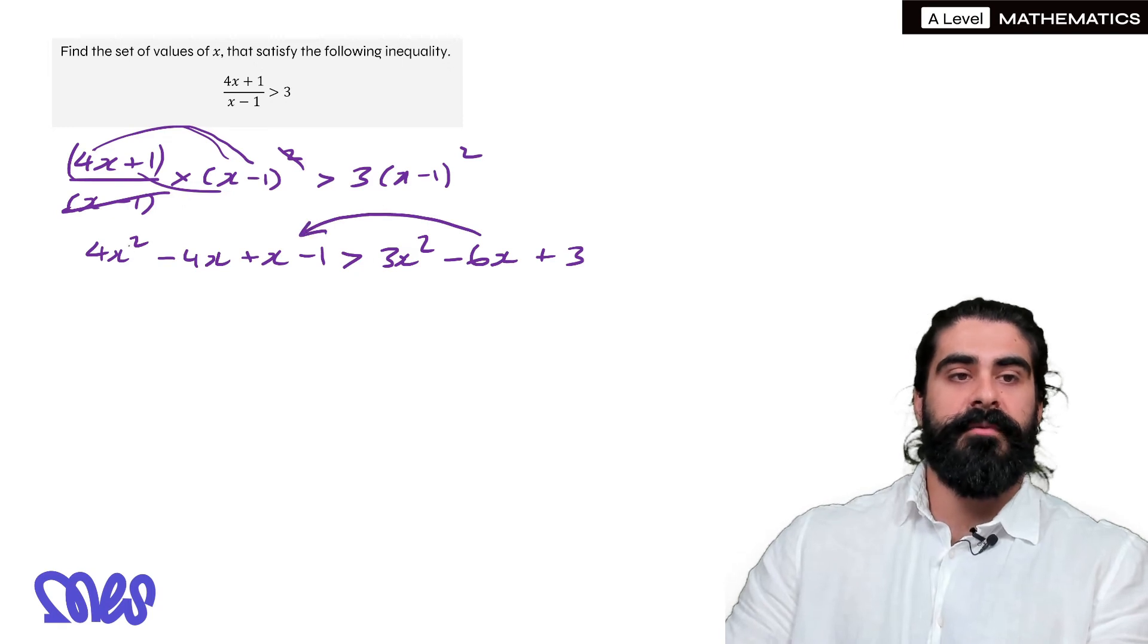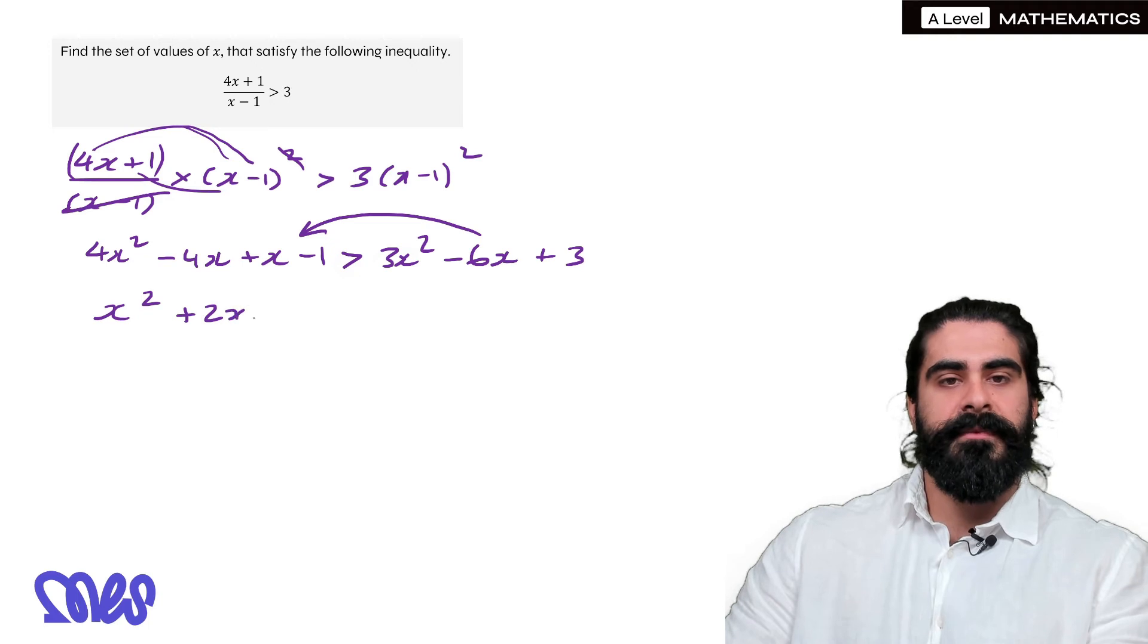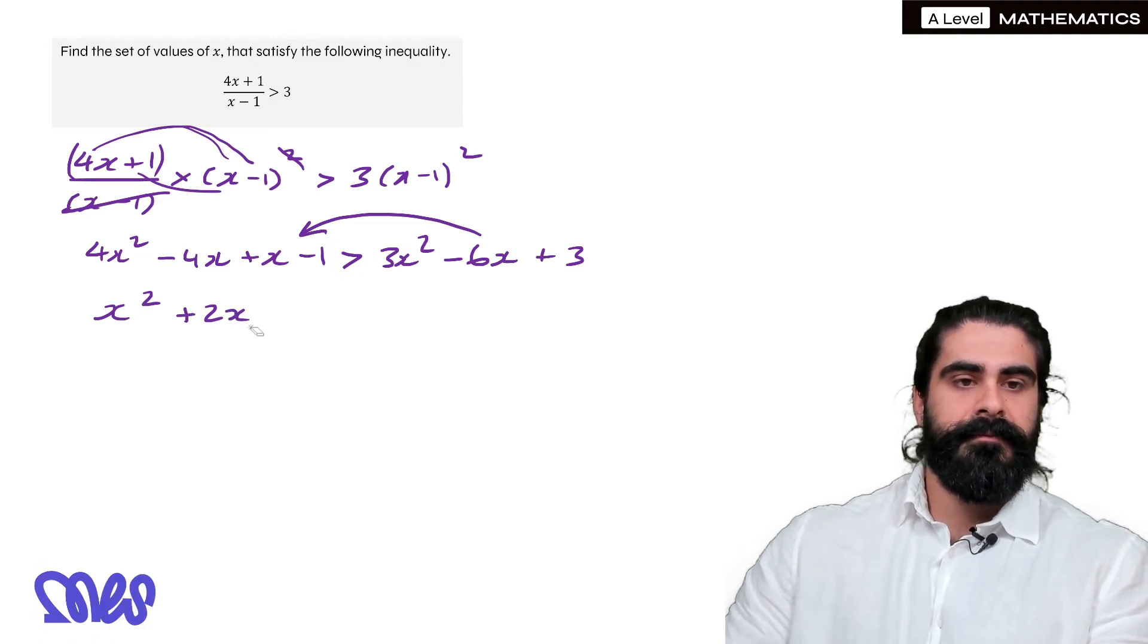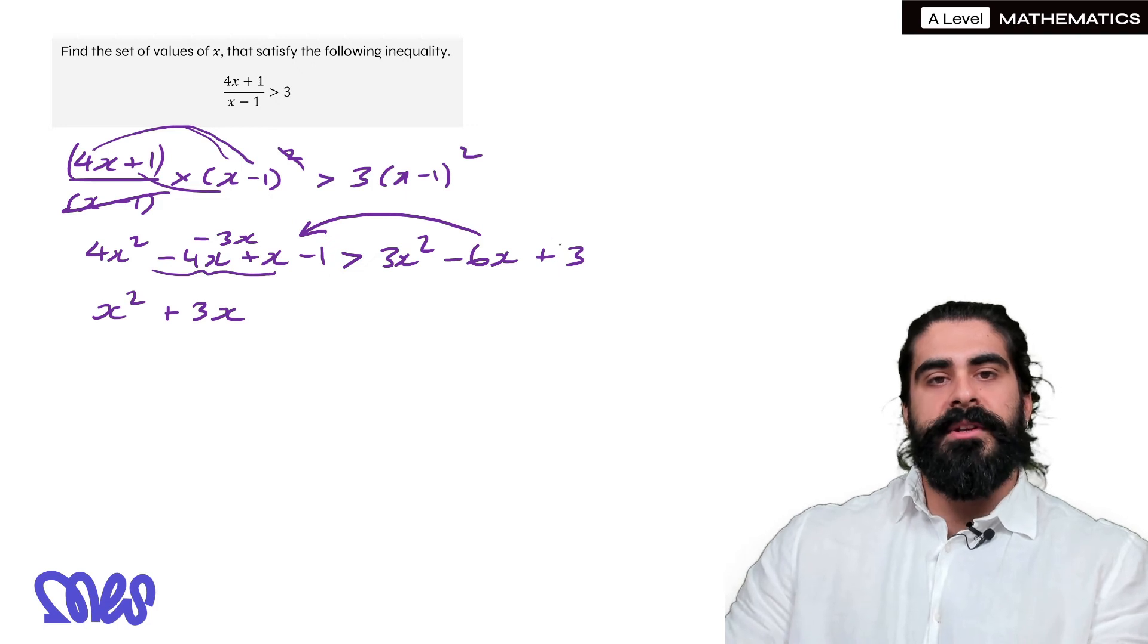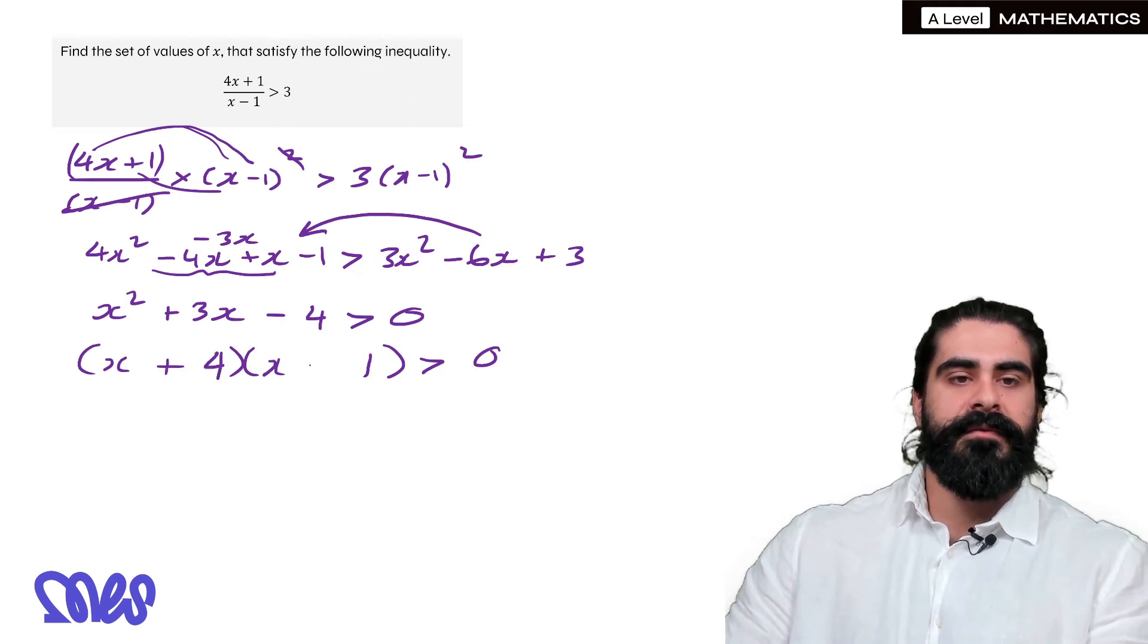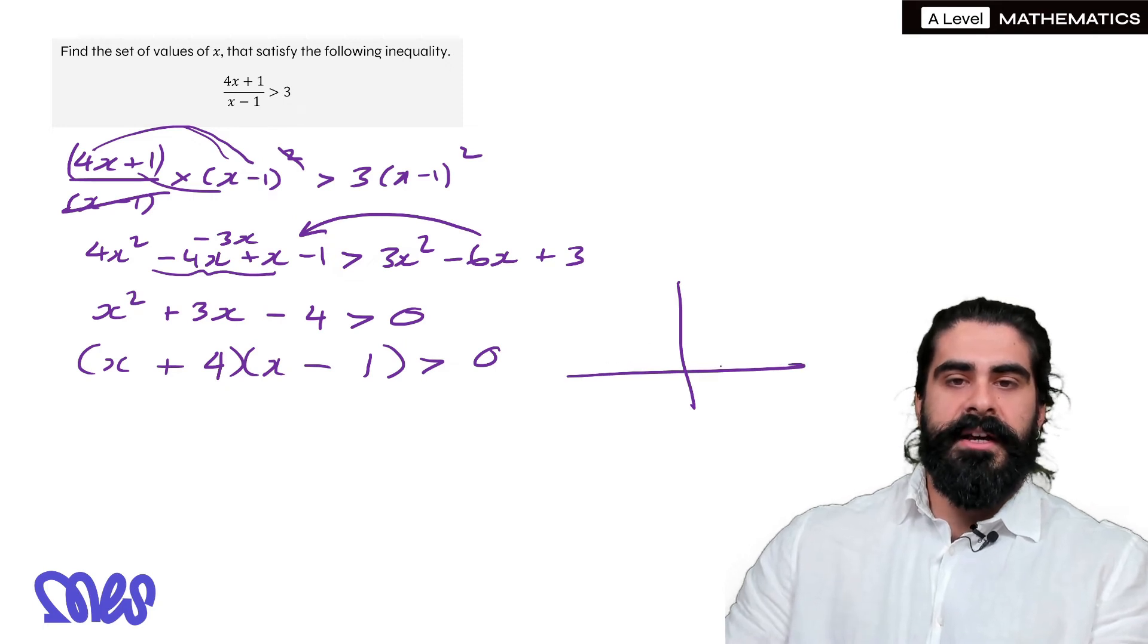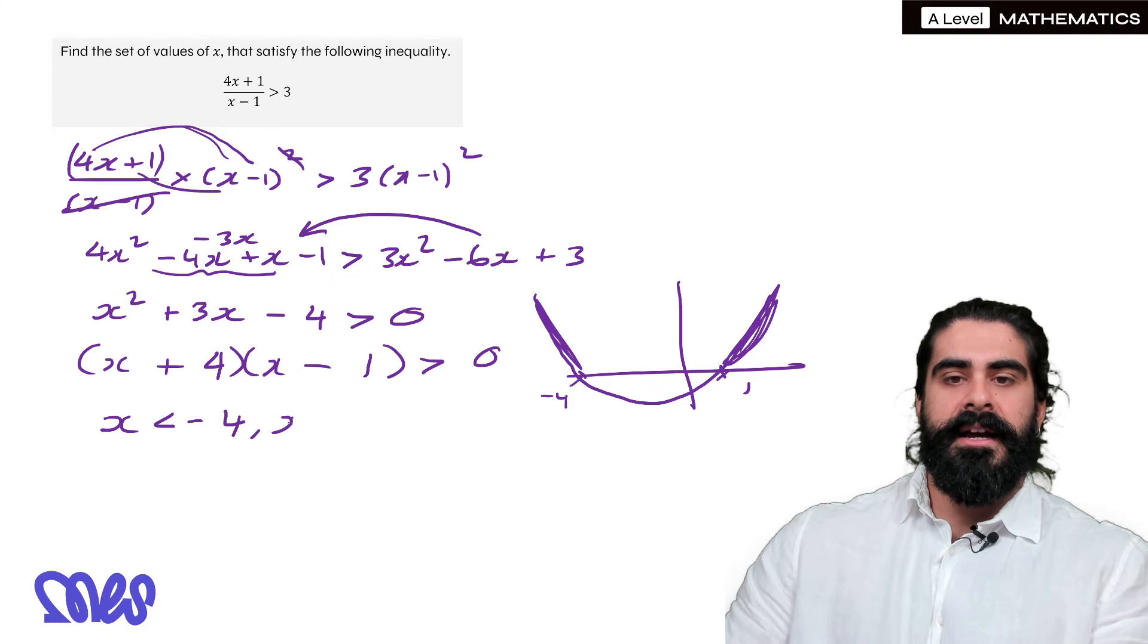Move everything over to this side. 4x squared minus 3x squared is x squared. Now here we have minus 4x plus x is minus 3x, then when we add the 6x over would give us a plus 3x. Then we're subtracting 3 from both sides, would make minus 4 is bigger than 0. This is a nice factorize. So we're going to get 4 and 1, we're going to have plus 4 minus 1. So when we sketch that, we have 1 and minus 4. Now when is that bigger than 0? We have the ends here. We have x is less than minus 4 and x is bigger than 1.